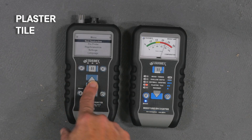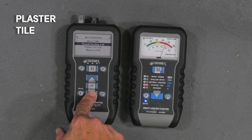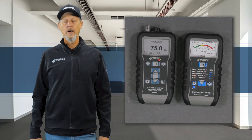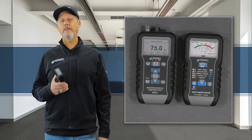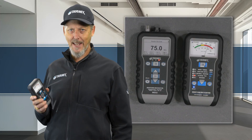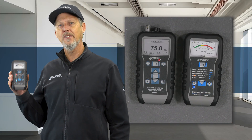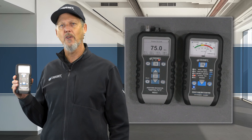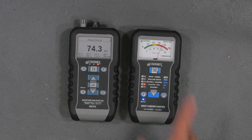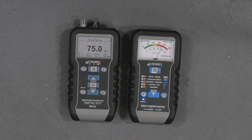We'll change the MEX5 as well and go to plaster. Now you see the number has come down a bit. The idea is that when doing comparative readings of any particular material, we want to establish a setting in a known dry spot that will give us a number as close to zero as possible, but not zero.